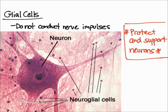The main purpose of glial cells, or neuroglia, is to protect and support the neurons. There are many different types of glial cells, which we'll cover in future videos. They have a wide variety of functions, but overall they protect and support neurons — they're pretty much like the neuron's assistant.